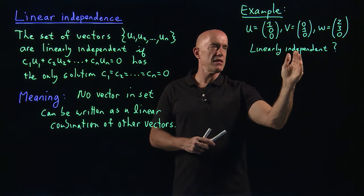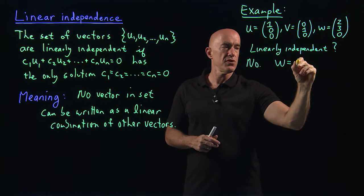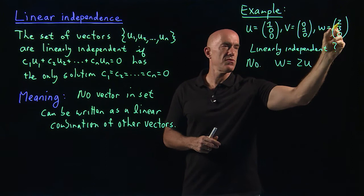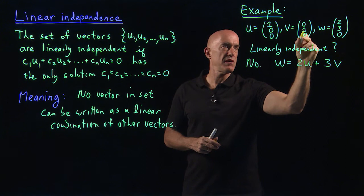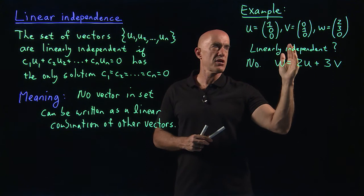So, it looks like we can write W as a linear combination of U and V. So, I would claim are they linearly independent? I would say no. And the reason they're not is because I can write W as 2 times U. Right? So, 2 times the first row puts a 2 there plus 3 times V. So, 3 times V puts a 3 in the second row. So, these three vectors are not linearly independent because I can write W as a linear combination of U and V.